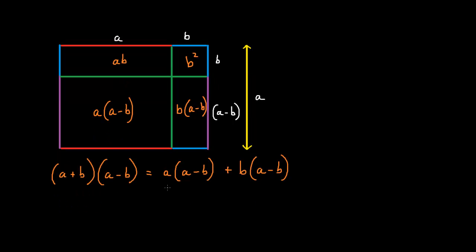So the question now is, what is a multiplied by a minus b, and what is b multiplied by a minus b? If we look at the rectangle closely, we'll see that a multiplied by a minus b equals a squared minus ab. Because you can see that this big square over here is a squared, and if we minus ab, we're left with a multiplied by a minus b. Therefore, a multiplied by a minus b is a squared minus ab.